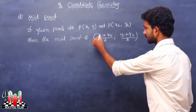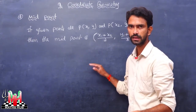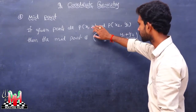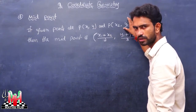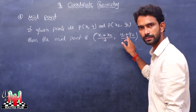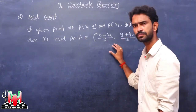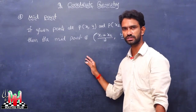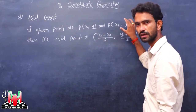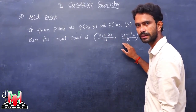It is very simple. We have to declare the points in the graph. The formula is x1 plus x2 by 2 comma y1 plus y2 by 2. The midpoint is x1 plus x2 by 2 comma y1 plus y2 by 2.